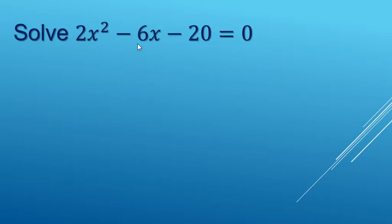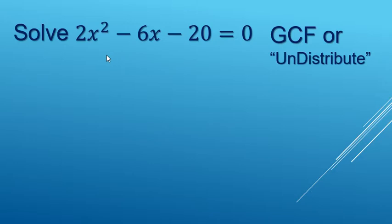First up, notice that each of these terms is even. In other words, they're divisible by two or they have a greatest common factor of two. So we're going to use greatest common factor, which is like undistributing, in this case, a two.